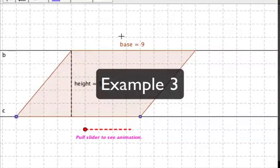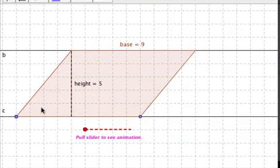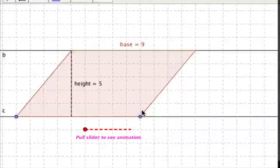Alright, in our last parallelogram, we have this parallelogram here. It's got a base of nine, it's got a height of five. And we learned that the formula for the area of a parallelogram is base times height, just like in a rectangle.